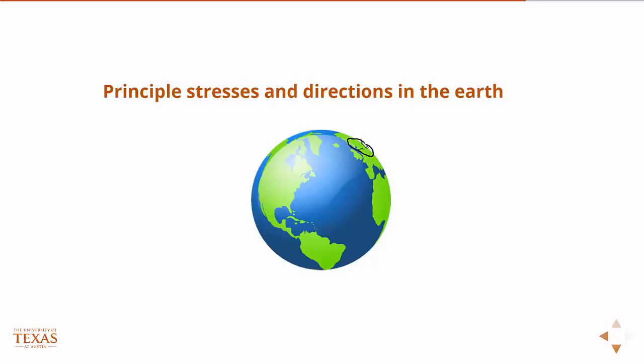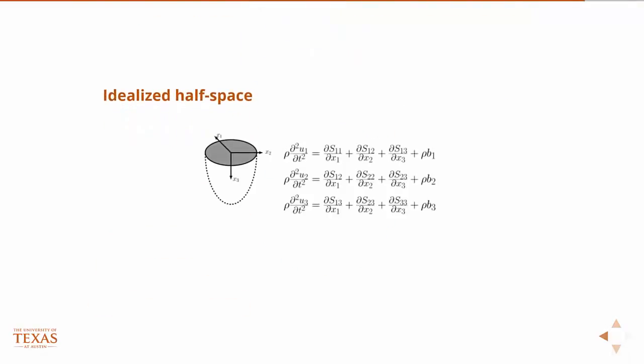Let's pull out what I'm going to call a half space, basically a semi-infinite region of the Earth. We'll station a coordinate system on the Earth right at the surface. So that's what we have here.